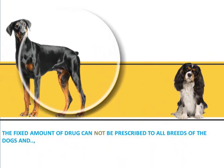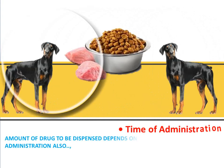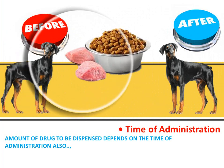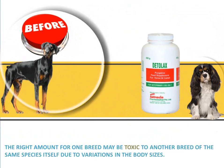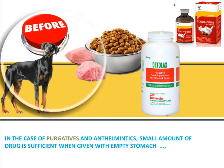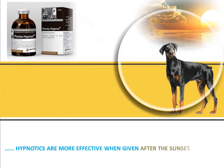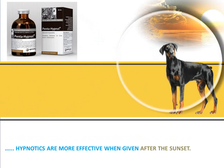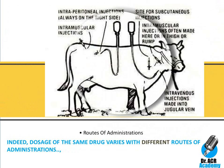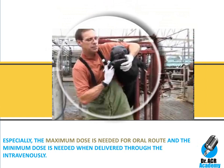Different weights of different breeds of the same species and different animals must be considered while prescribing drugs. The fixed amount of drug cannot be prescribed to all breeds of dogs, and the amount of drug to be dispensed also depends on the time of administration. The right amount for one breed may be toxic to another breed of the same species due to variations in body size. In the case of purgatives and anthelmintics, a small amount of drug is sufficient when given on an empty stomach. Hypnotics are more effective when given after sunset. The dosage of the same drug also varies with different routes of administration — the maximum dose is needed for the oral route and the minimum dose when delivered intravenously.